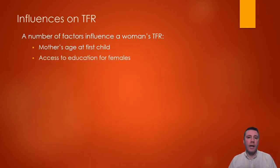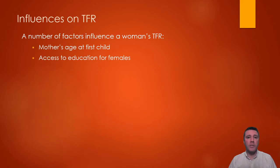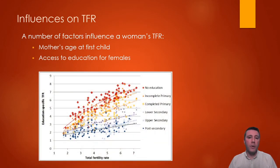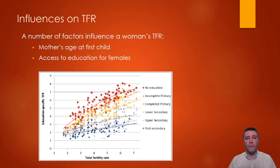With greater access to education, specifically for females, there is a decrease in TFR. There are a few generally accepted connections between education and TFR. First, educated females have the knowledge necessary to care for children better, which increases their likelihood of survival, meaning females have a lesser desire to have more children. Having an education also generally confers more economic opportunities to females, decreasing the desire to have more children, and it improves the effective use of contraceptives.